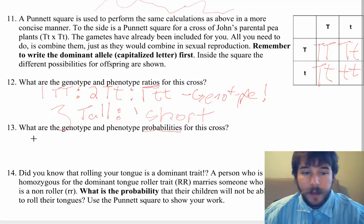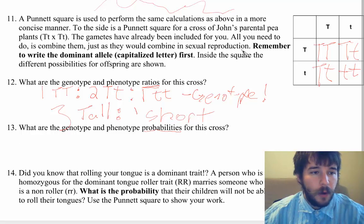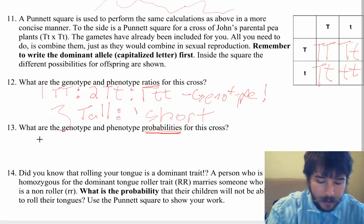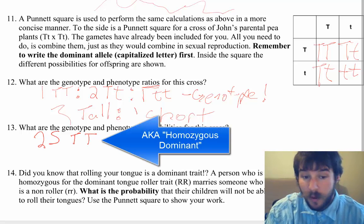So down here for the probabilities, that one's actually pretty easy. Again, the genotypes, you have to break down all the different genotypes. You've got a big T, big T, big T, little t, and a little t, little t. But here, we're going to do it as a probability. So what's the probability of getting this? That is going to be one out of four. So there's a 25% chance of being big T, big T, because that's one out of four.